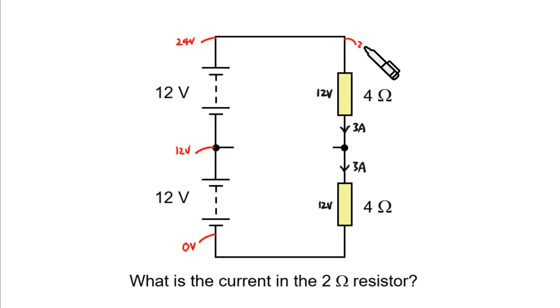And so, this 24, and we have 12 volts across this 4 ohm resistor. So, the potential will drop from 24 to 12 here. And then you drop another 12 volts to become 0 volts here.